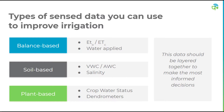Each one of these techniques can be improved by utilizing in-block sensors. For the balance-based approach, you'll be using weather sensors that measure climatic variables. For a soil-based approach, you'll be looking at soil moisture probes that measure volumetric water content or plant-available water. With the plant-based approach, you'll be measuring some form of crop water status, whether directly or indirectly. Having all these data points layered together can help you make the most informed decisions.